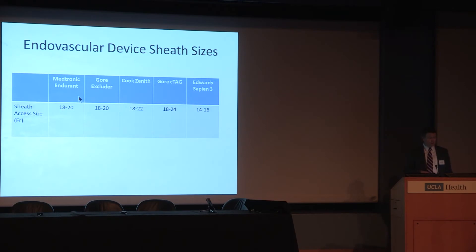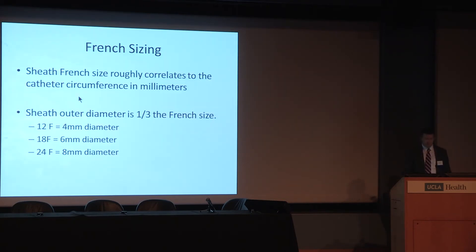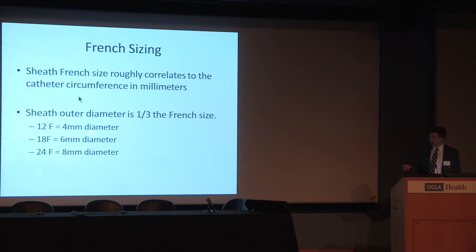Dr. Lane went through these concepts, but I'll reiterate the existing sheath sizes. The most common products: Medtronic is delivered through an 18 to 20 French; the Gore Excluder is also 18 to 20 French; Cook is a little bigger at 18 to 22. Moving into the thoracic world, we have larger diameter devices with larger access sheaths — 18 to 24. The Edwards Sapien TAVR device goes through a 14 to 16. The conversion from French to millimeters: the outer sheath diameter is a third of the French size. A 12 French sheath is a 4mm diameter; a 24 French sheath is an 8mm diameter — that starts stretching some of our patients' common femorals.